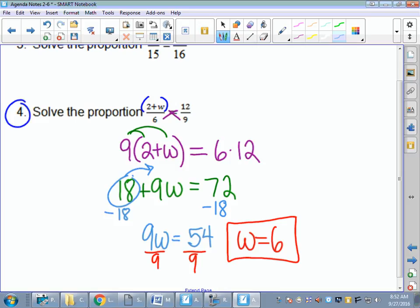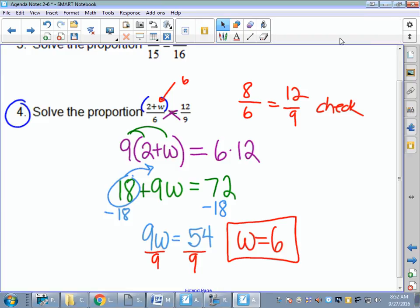Remember, there is a built-in check. I could substitute that 6. 2 plus 6 is 8 over 6 equals 12 over 9. Then I could do a check by either simplifying or cross-multiplying again. 72 equals 72.